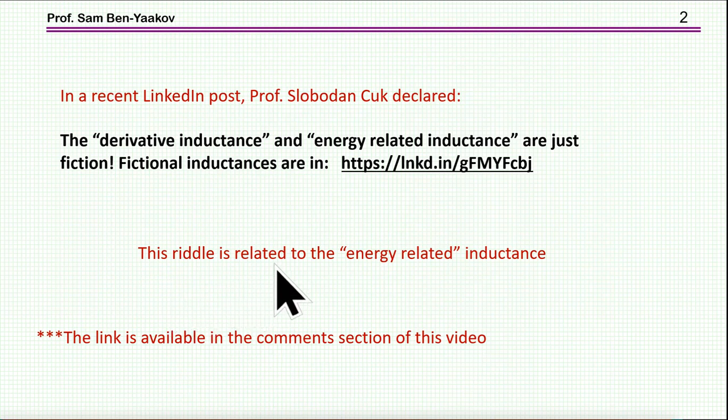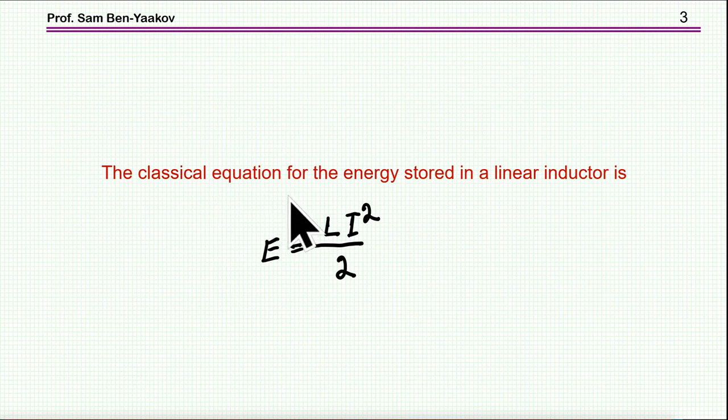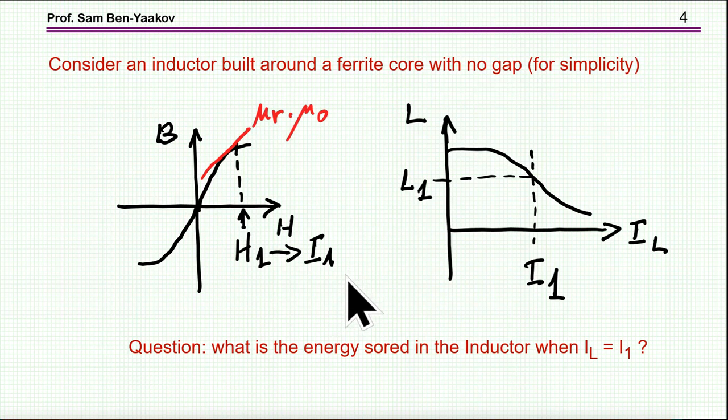So, the riddle is related to the energy-related inductance. This is the subject of this riddle. Now, we know that the classical equation for the energy stored in a linear inductor is energy equal to Li² over 2. This is very well known, of course, and used widely. But the question is, what happens if the inductor is non-linear?